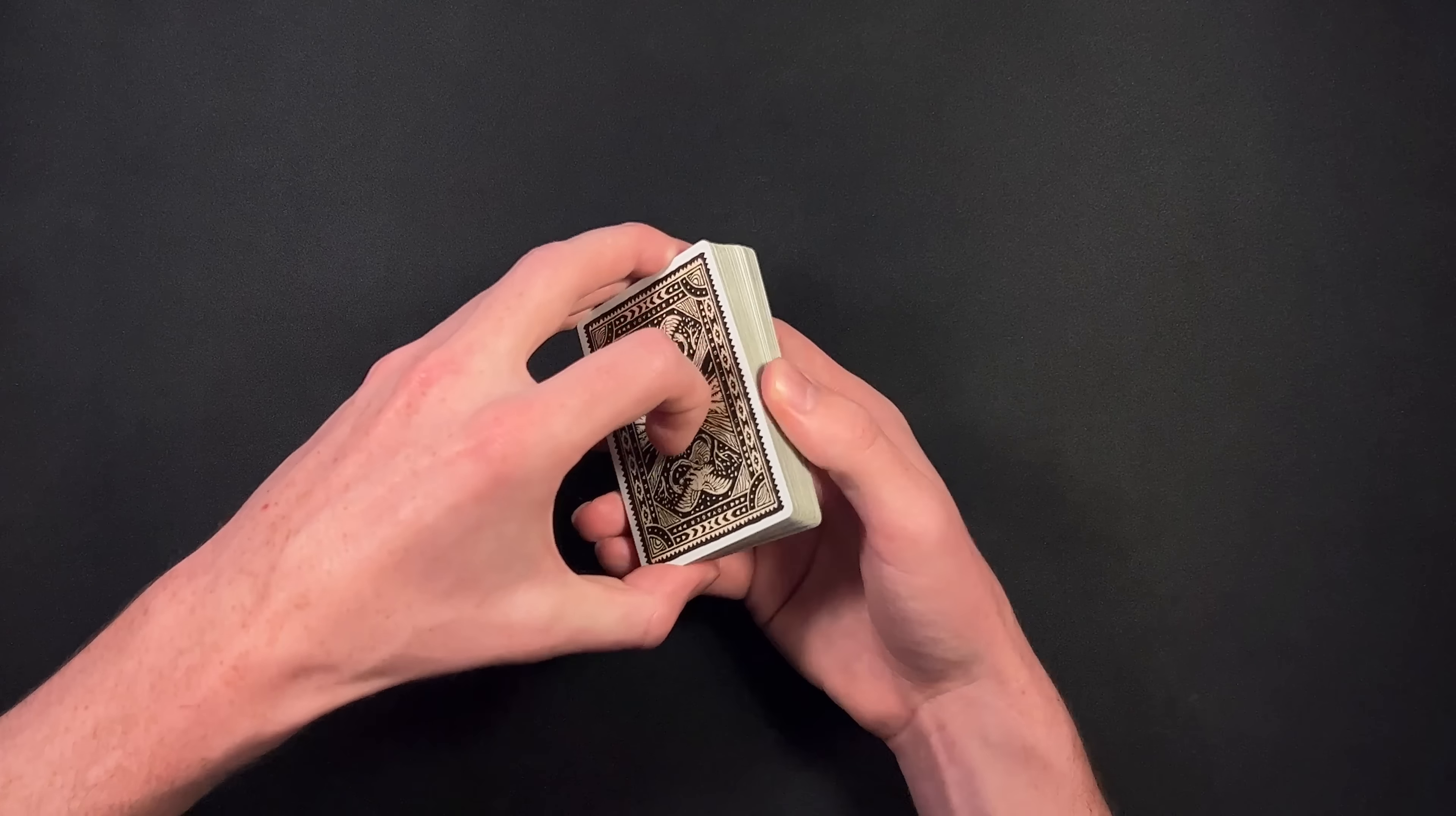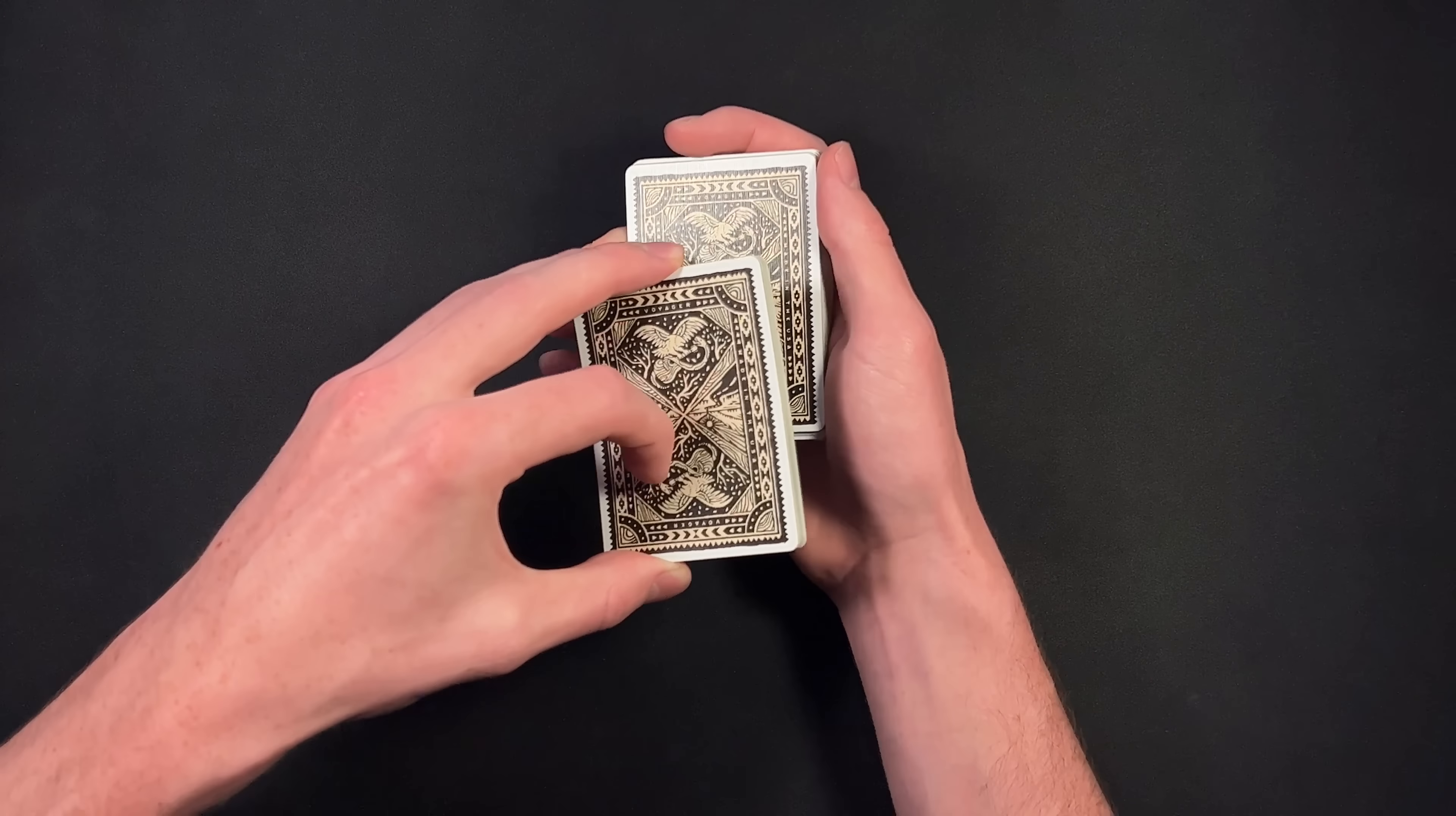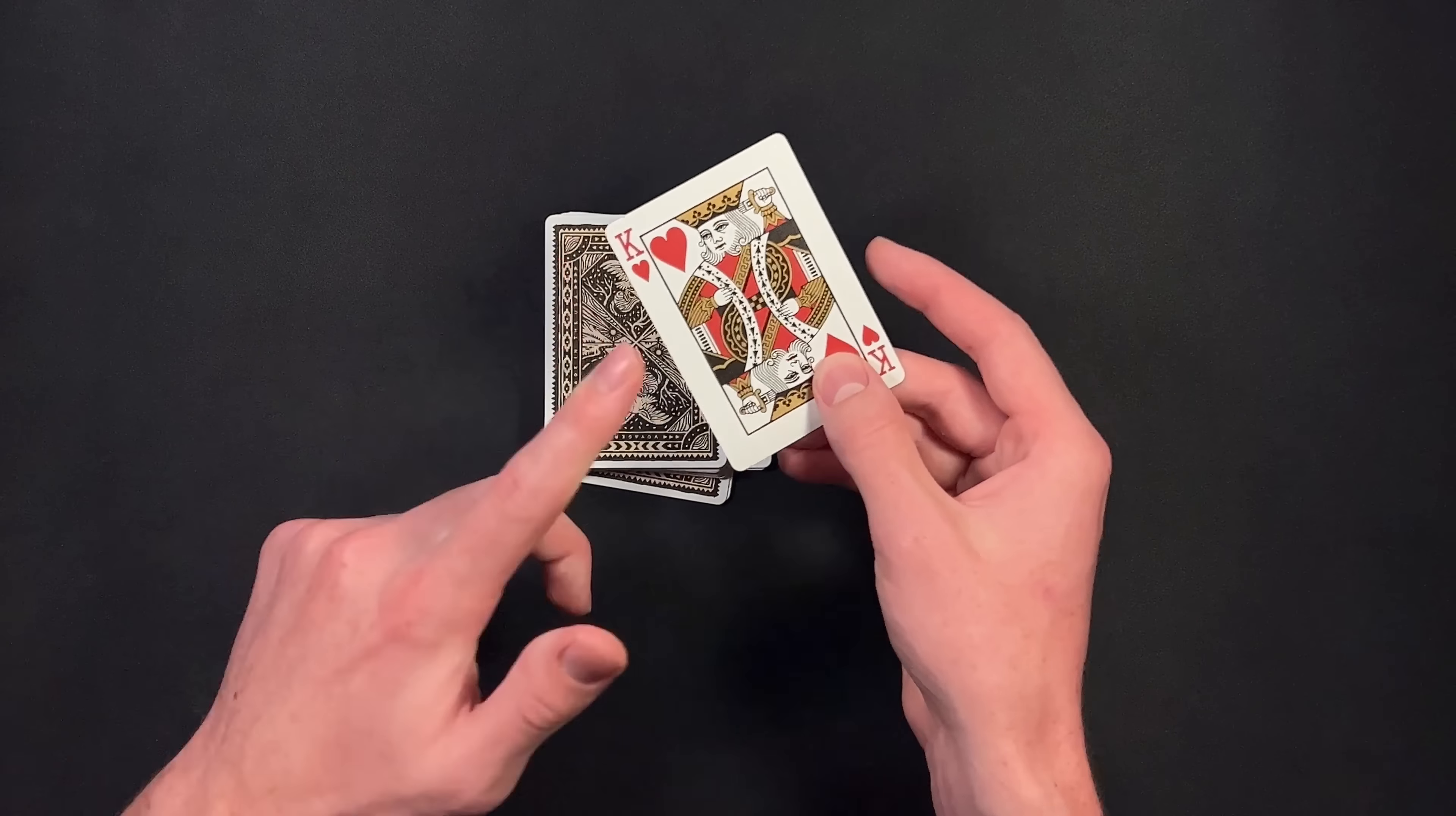I'll show you what I did in the performance. I would have my spectator call stop as they dribble off cards. They're going to take a look at the card where they called stop. Just have them look at it in the performance, but for the tutorial, we'll look at it together. In this case, we have the King of hearts. They're going to place the card back in face down, and then you're going to dribble off the rest of the cards, starting from the bottom, going up to the top. So you're going to start from the bottom like this, dribble up to the top, and then come over with the other hand, lift up on these cards, getting this natural thumb break, and then you control it to the top. You can do a double undercut or transfer it over to a pinky break in your other hand, cut all the cards from above the break on the table, and you've just controlled their selection to the top.